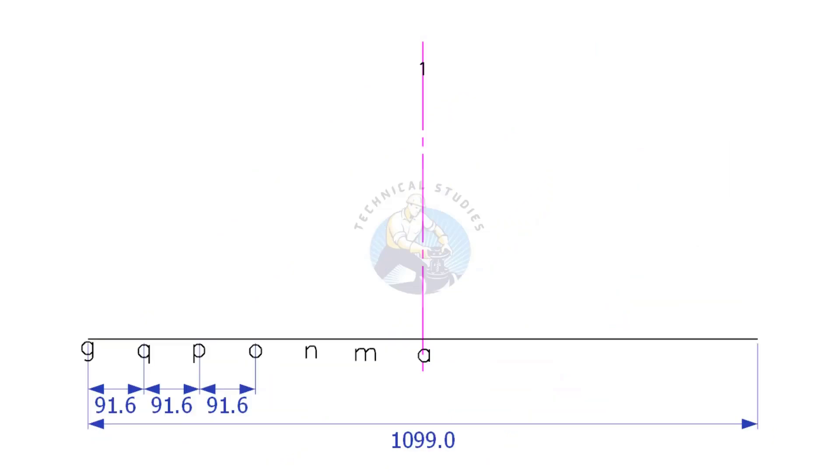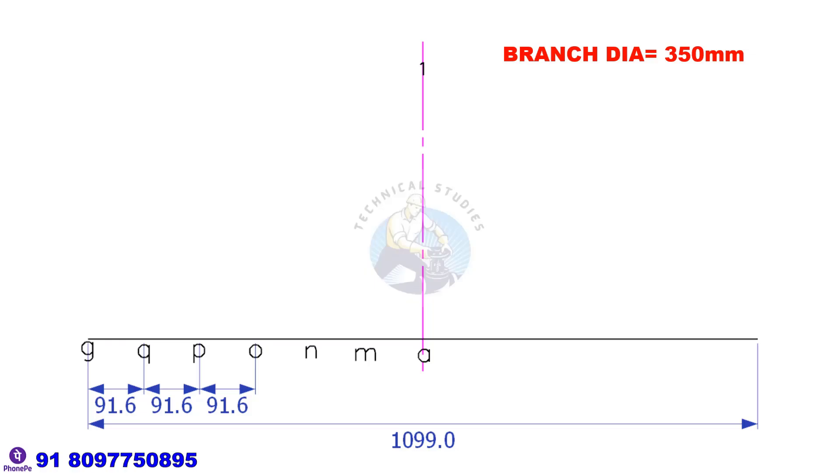Let us calculate the circumference of the branch. Branch diameter is 350 mm. Circumference is 350 multiplied by 3.14 equals 1099 mm. Draw a line 1099 mm long and divide it into 12 equal parts. Each part will be around 91.6 mm.